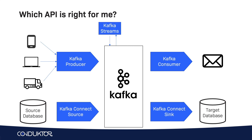If we want to do stream processing — modifying the data in real time within Apache Kafka — we would use the Kafka Streams API. And if we wanted to simplify using Kafka Streams, because Kafka Streams is a Java API, we could use ksqlDB to use a SQL interface on top of Kafka Streams to make it even simpler. That's it for a short intro of this section. I will see you in the next lecture to discuss the schema registry.